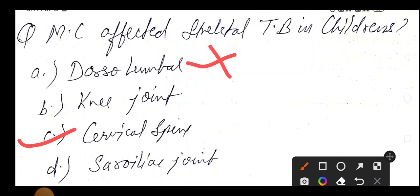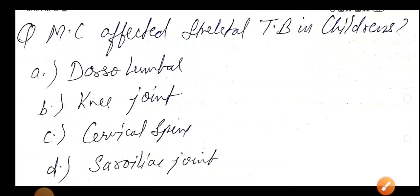If they ask rheumatology MCQ like ankylosing spondylitis, most common joint involved, that is sacroiliac joints. In ankylosing, bamboo spine there. But our topic is skeletal tuberculosis. So hope it's clear.